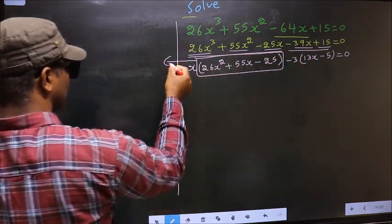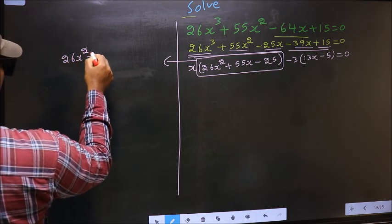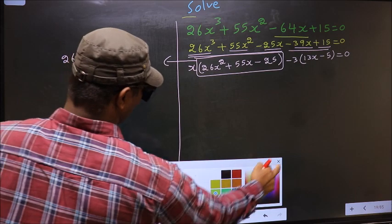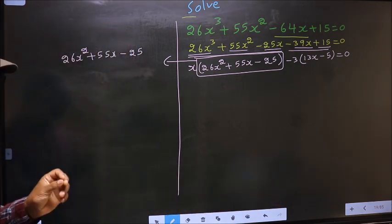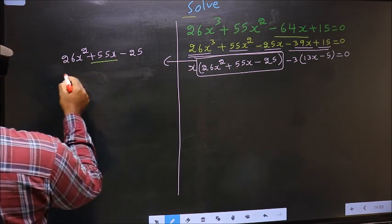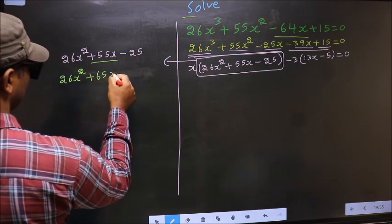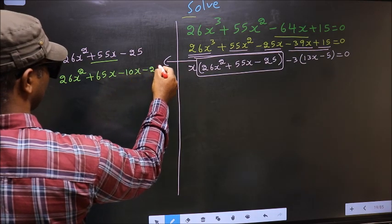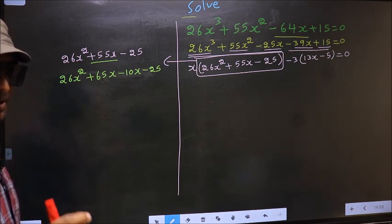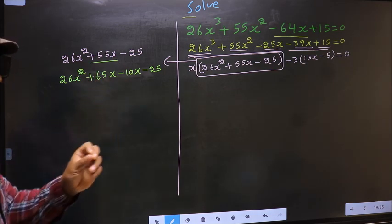So I will factorize the quadratic here. That is 26x squared plus 55x minus 25. To factorize this, we should split the middle term plus 55x. So in place of plus 55x, now I write plus 65x minus 10x minus 25. I am not doing factorization steps — directly I have split.